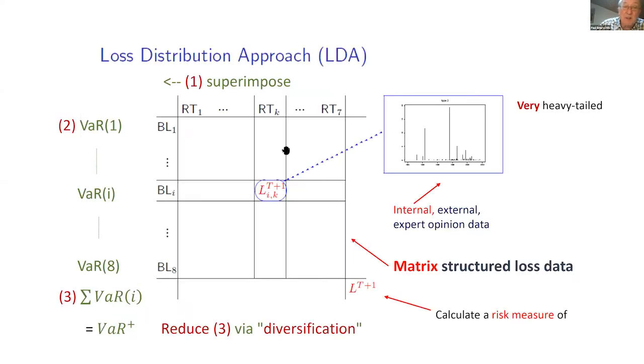Let me go to a picture here. So what's the setup? The seven and the eight are totally unimportant, but it's just a matrix-structured loss data. That's the basic setup. In this matrix-structured loss data, you have certain risk types and you have certain business lines. You have business line i, let's say corporate finance, and risk type k, let's say internal fraud. And then you look at the current year or past information. You look at what is the loss experience over that period. The loss experience is what we mathematically or in insurance call a marked point process.